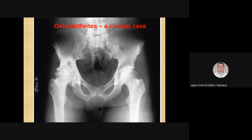Looking at the right side, we can see the head of the femur and the acetabulum. There is a gap between the head and the acetabulum that indicates the presence of cartilage. We can note that this gap is decreased — less than normal — but it is still present, meaning the cartilage layer is decreased but still present.